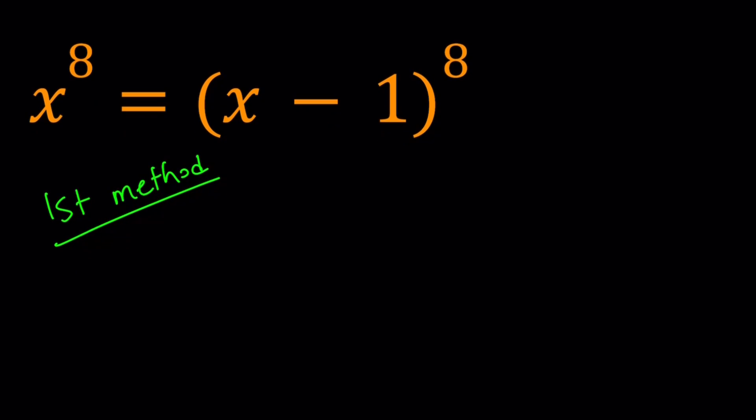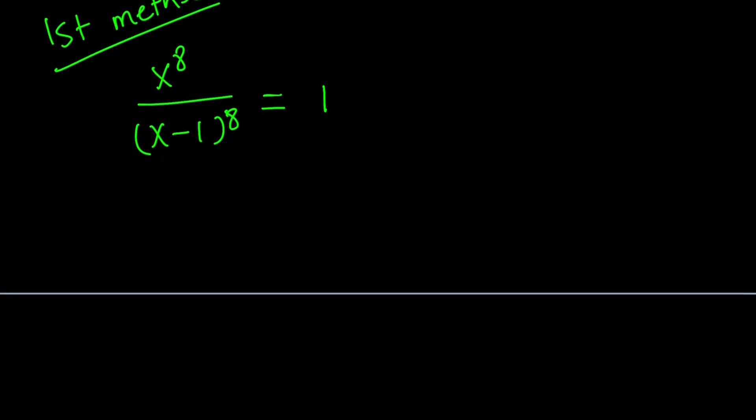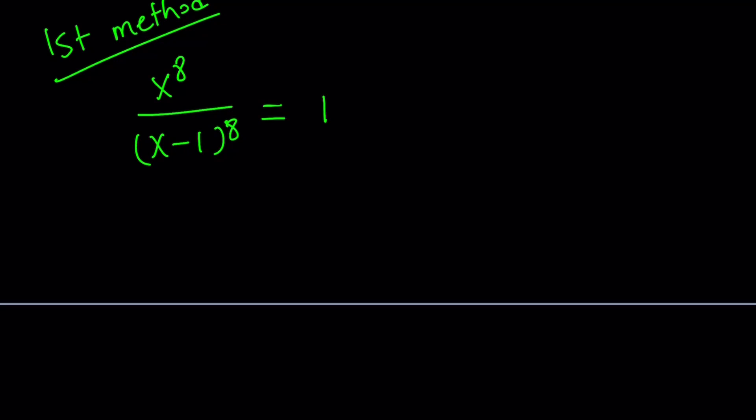So for my first method I'm going to divide both sides by x minus 1 to the 8th power. So I'm going to write it as x to the 8th divided by x minus 1 to the 8th and that equals 1. Obviously if x is equal to 1 it's not going to work because 0 equals 1 false. So we know x does not equal 1. That allows us to divide both sides by x minus 1 to the 8th power. Now the next thing we're going to do is put these two together with the same exponent. So write it like x over x minus 1 to the 8th power.